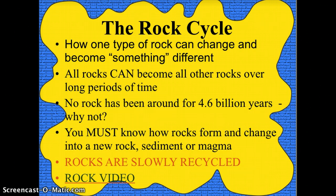Welcome back to another great rock video. This one is our final video: The Rock Cycle. This is putting everything together — how one type of rock can change and become something different. All rocks can become other rocks over long periods of time, or disappear from being rocks and become magma or just sediments. Think about why no rock on earth has been around for 4.6 billion years. The point of this is to know how rocks form and change into a new rock, a sediment, or magma — how things move through the cycle because rocks are slowly recycled.